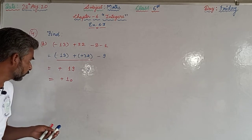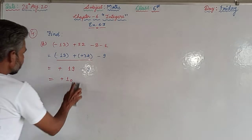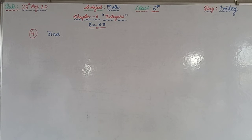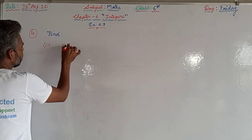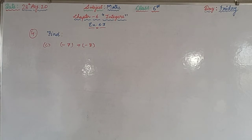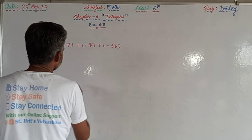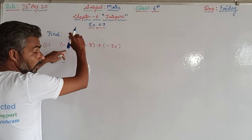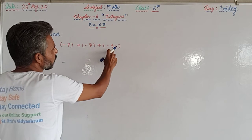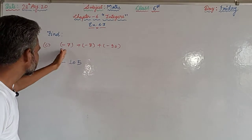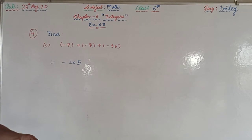Now part C: minus 7, plus minus 8, plus minus 90. Here all three integers have the same sign, so we add all of them. 8 plus 7 is 15, and 15 plus 90 is 105. Since all integers have the same sign and that sign is minus, the answer is minus 105.